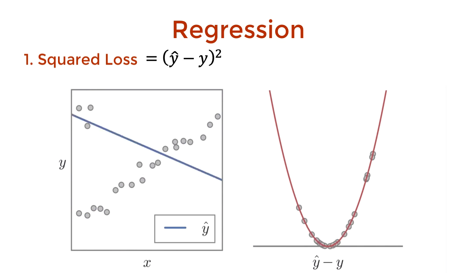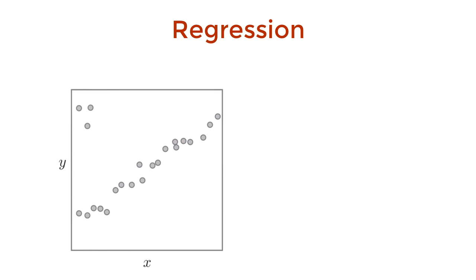But if I introduce some outliers in this data, my model responds by freaking out and trying to fit those data points better. This happens because that square term scales the errors by these outliers. So the model really wants to get these obscure points right.